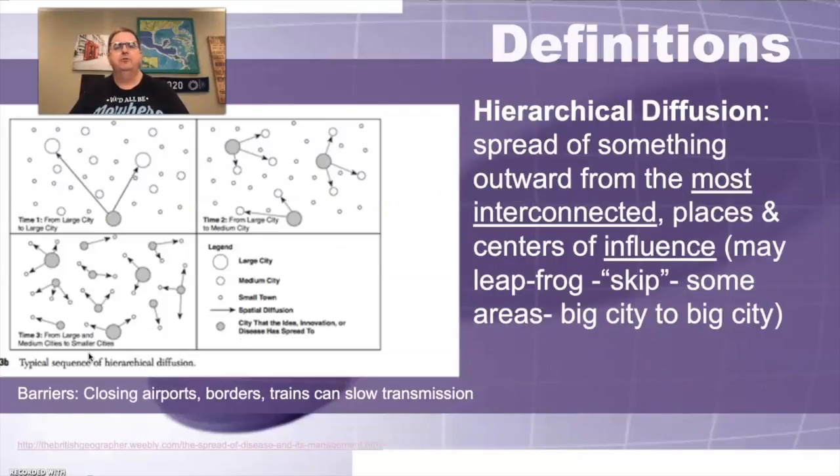There is a second type of diffusion, and it's part of expansion diffusion, but it's called hierarchical. And it follows a different pattern. So this is when something spreads, when something's super connected from the most interconnected places and centers of influence, like big cities. Like New York City is a big city.